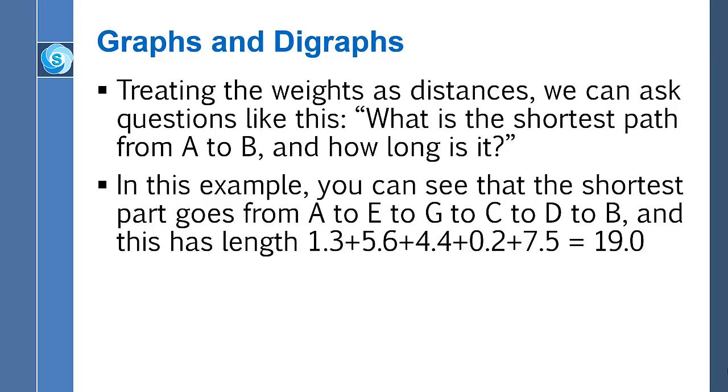Now this is at variance with our earlier definition. When we didn't have any weights, when we did not have edge weights, then we would say in that context that the length of the path from A to E, E to G, G to C, C to D, D to B, that that would be a path of length 5. So hopefully that makes sense to you.